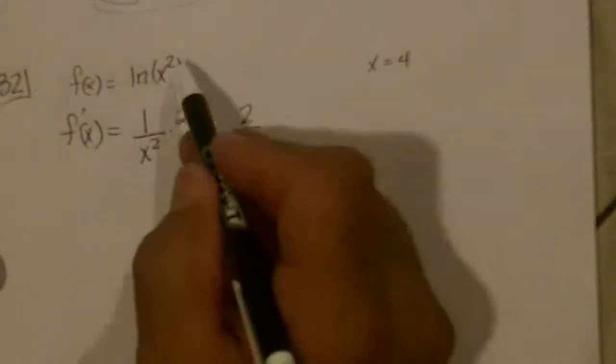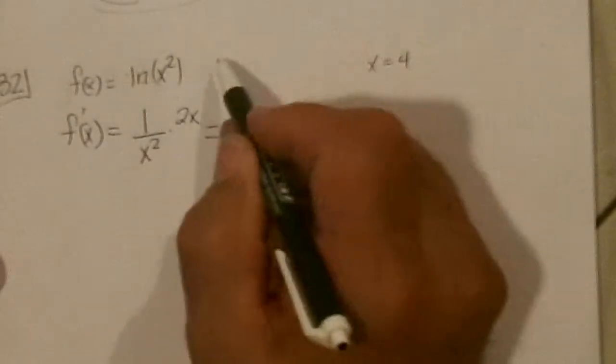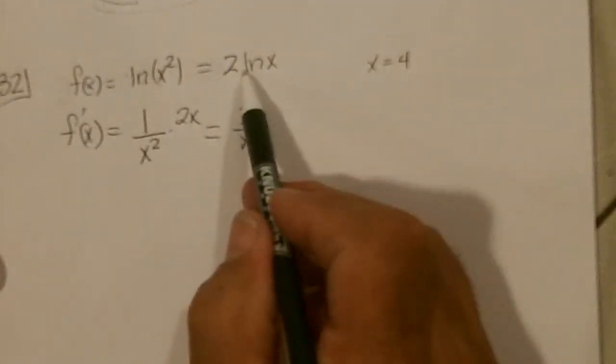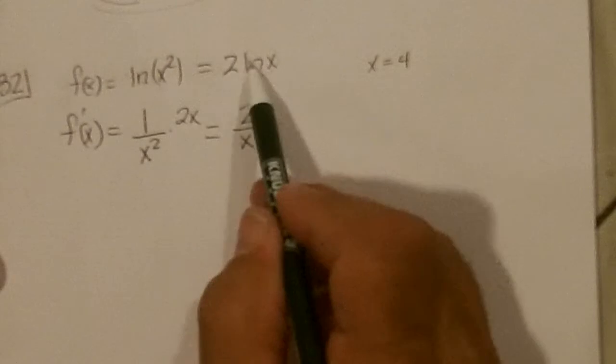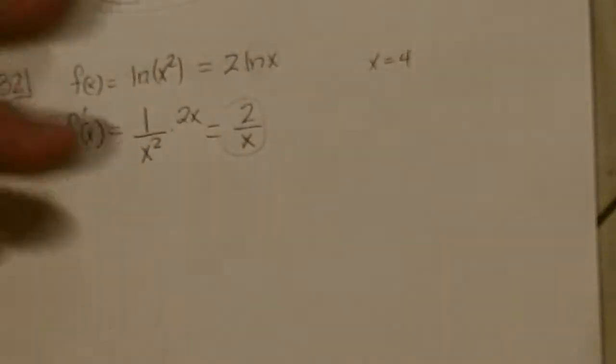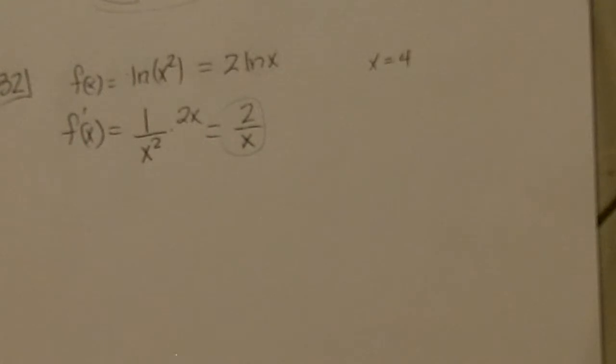Or we could have said, this is to the 2 power. We could have brought it down. And that would have been 2 ln x. And then the derivative of that, derivative of ln, is 1 over X times 2. We get the same answer. So you could have done it either way.